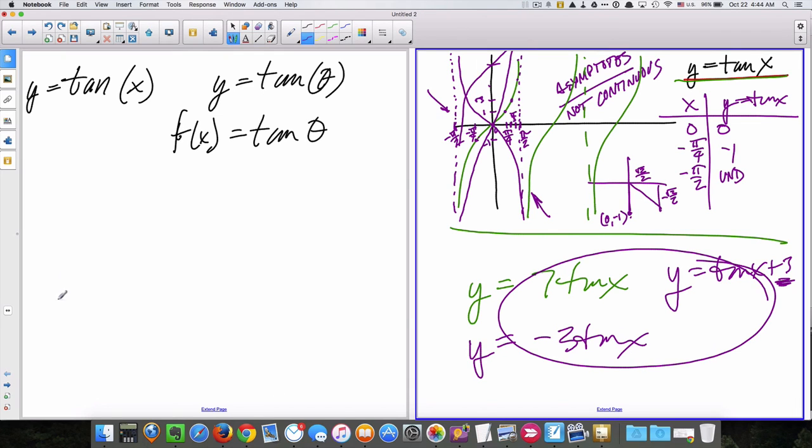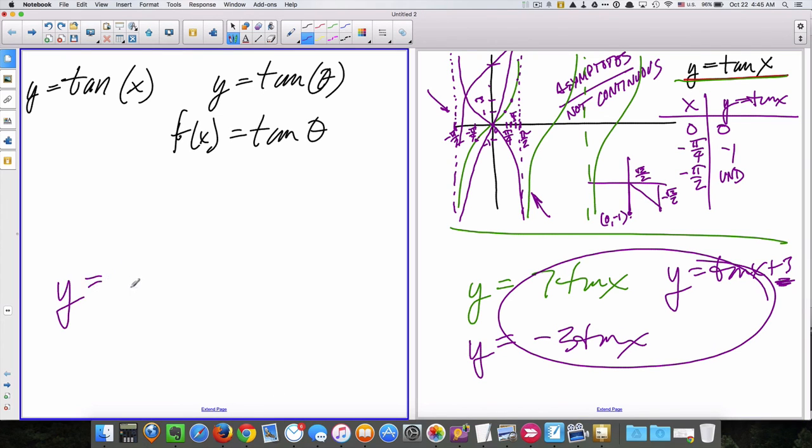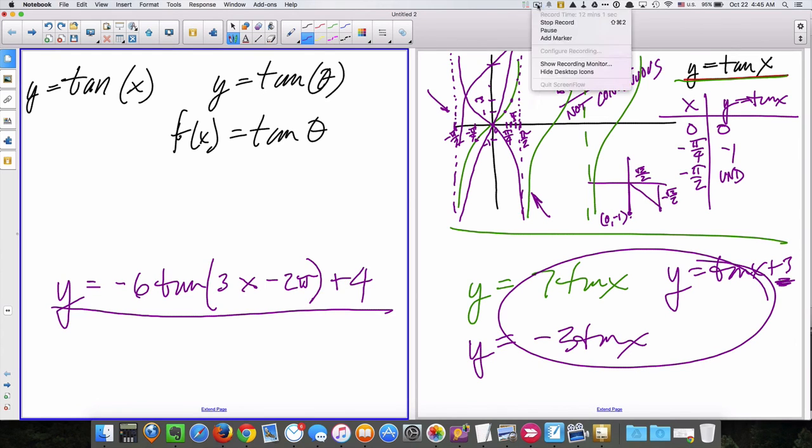So, here's the question I'm going to ask you about in the Google form, or whatever I'm using these days. Let's put some numbers in there. y equals negative 6 tangent 3x minus 2 pi plus 4. So, hit pause right now. Copy that down. Unpause. It'll be the end of the video. And, hit the Google form. Bye.